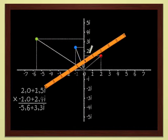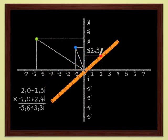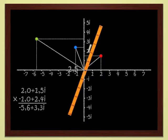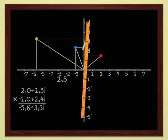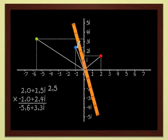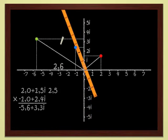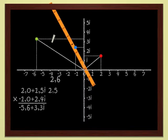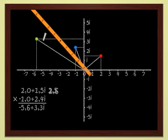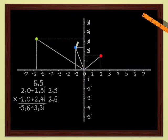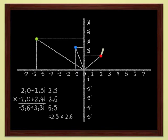Let's use the ruler to determine the modulus of the red point, which is 2 plus 1.5i. Let's see. It measures 2.5. The modulus of 2 plus 1.5i is therefore 2.5. For the blue point, I get 2.6. And for the green point, which is the product of the two points, I have 6.5. As a rule, the modulus of a product of two complex numbers is just the product of the moduli of the two numbers.